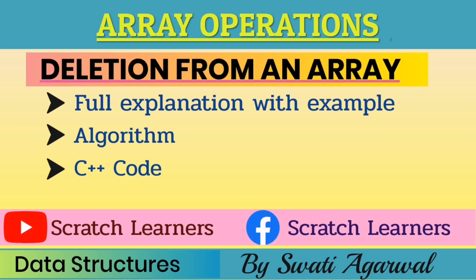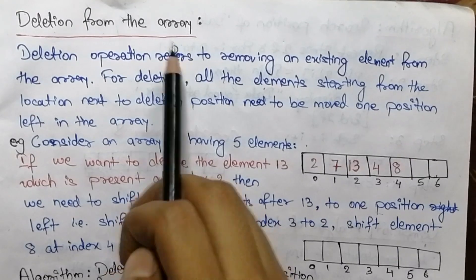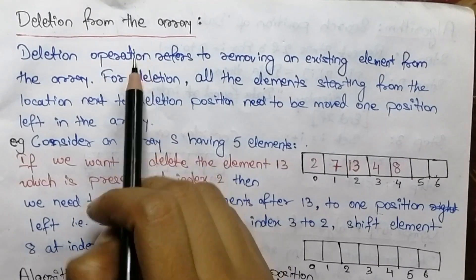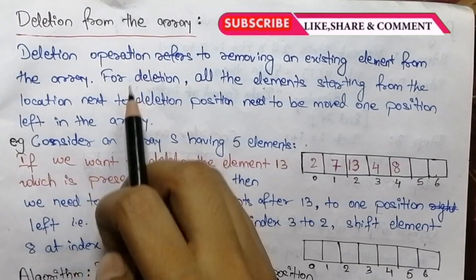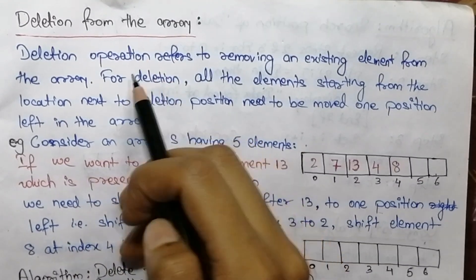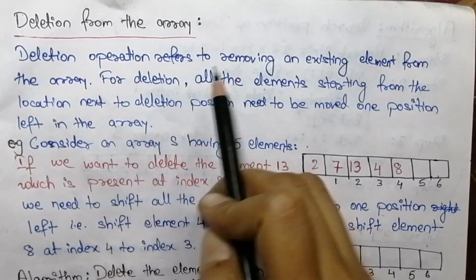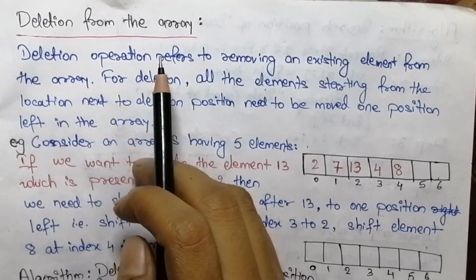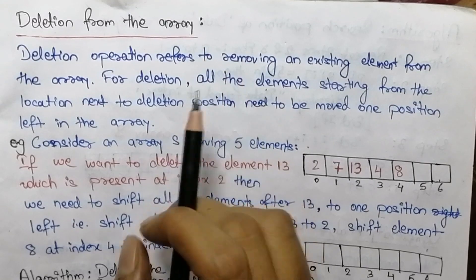Welcome back to our YouTube channel Scratch Learners. Today we will discuss the deletion algorithm with an example and the C++ code for deletion of an element. Deletion operation refers to removing an existing element from the array — that means deletion simply means to delete an element from the array.